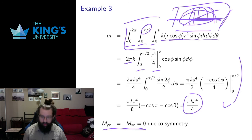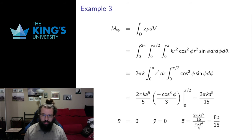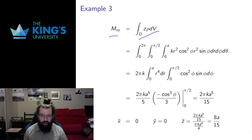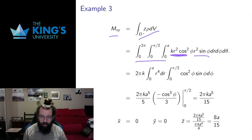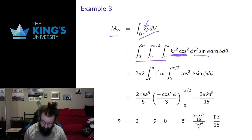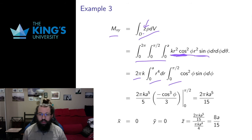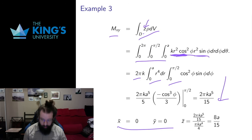The only non-zero first moment is the distance above the xy plane, since all the mass is above it. I calculate the first moment Mxy: same bounds, the Jacobian r squared sine phi, and I have kz times z which is kr squared cos squared phi — one r cos phi from the density and another r cos phi from the z in the integrand. This separable integral gives 2 pi from the theta integral. After completing all the integrals, the center of mass in x and y is zero (since those moments were zero), and the center of mass in z is the moment divided by mass, giving 8a over 15.